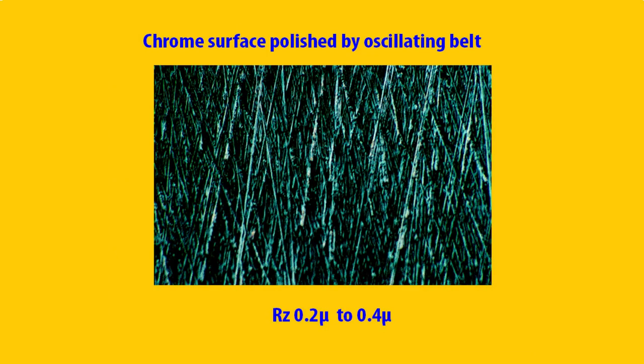Now we come to the point of what the roughness of the cylinder should be. There is no single answer — it depends on a combination of substrate, ink, and cylinder. The printer has to work closely with the cylinder and ink supplier to find what RZ value works best. In general, films work best with cylinder roughness in the range of 0.2 microns to 0.4 microns, while for paper and board jobs roughness works best in the range of 0.4 microns to 0.6 microns.